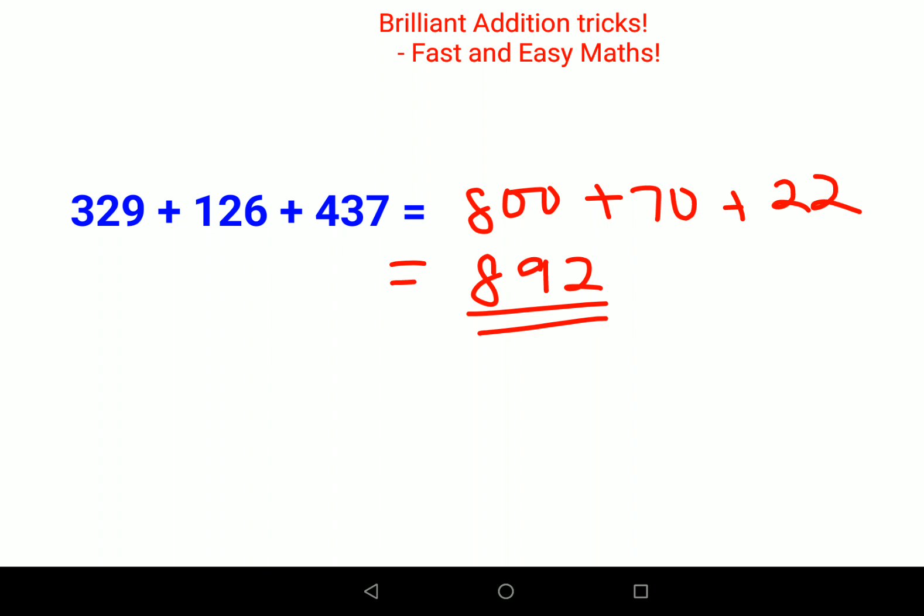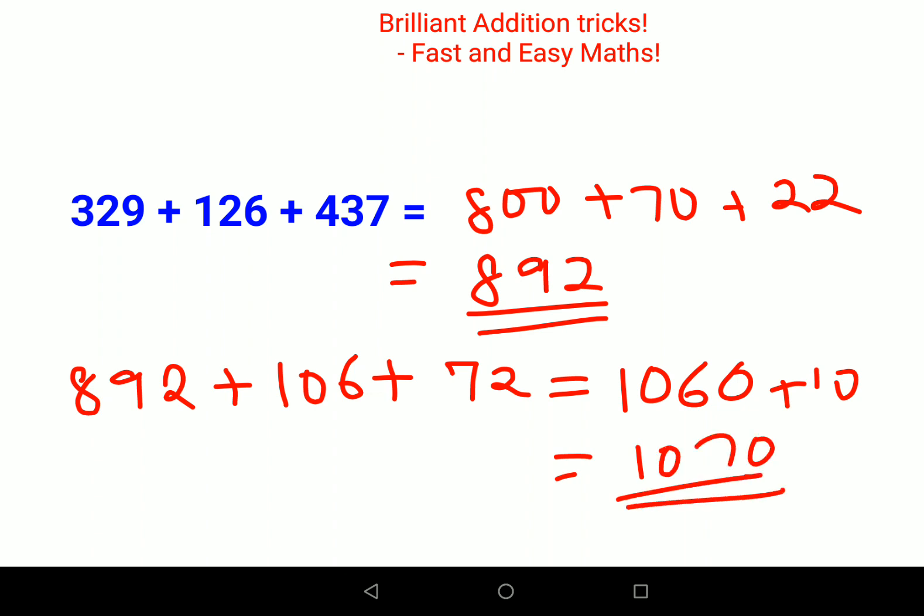Let's do one more: 892 plus 106 plus 72. Pause this video and try to do this in your head. 800 plus 100 gets you 900, 90 plus 70 gets you 160, so 900 plus 160 gets you 1060. Now 6 plus 2 plus 2 gets you 10, so your final answer is 1070.